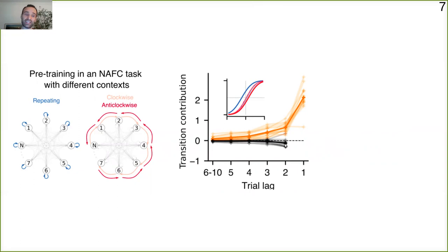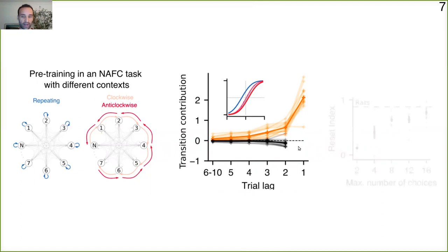You can see that when we train with 16 choices and then test on the two-alternative forced choice task, we are able to show that these black curves, the contribution after an error of the transition history, vanishes. Here I'm showing the reset index as a function of the number of choices, and as we approach 16 we get reset index values as the ones we find for rats.